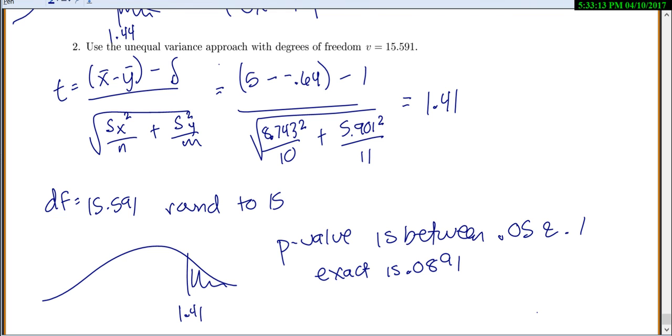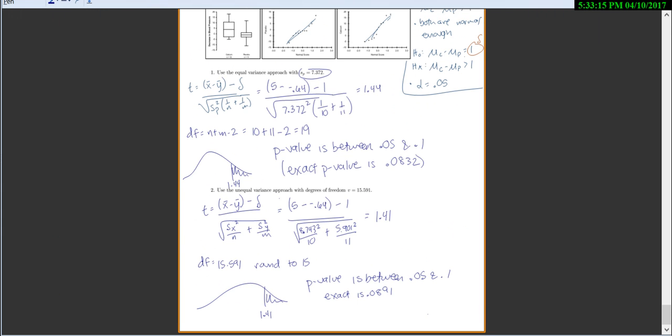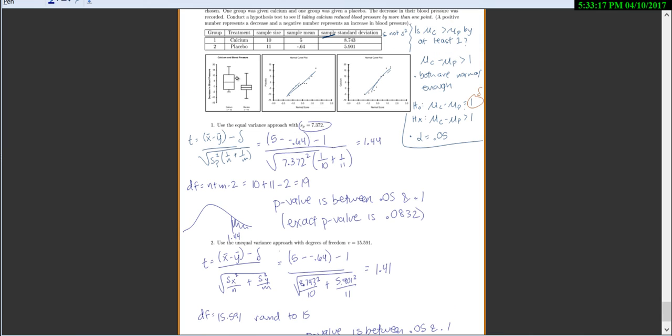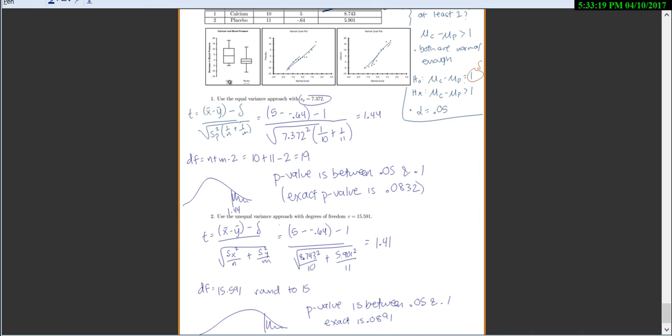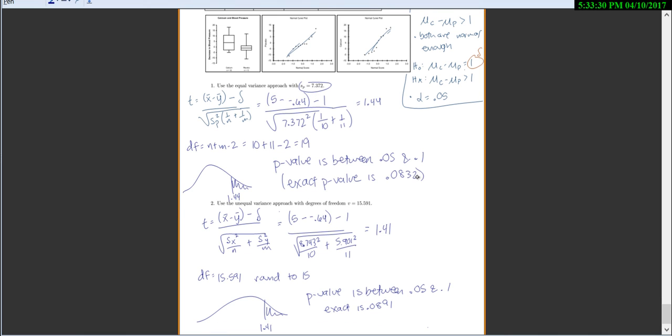Let's compare our two approaches. Once again, we weren't quite sure if those variances were the same or not. They were just kind of there on the border. You'll find that if they are the same, then these two approaches will give very similar results. Our t-statistics were very similar. Degrees of freedom, fairly close, not exactly the same. But the p-value is 0.0832, 0.0891. Very, very close.